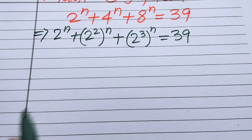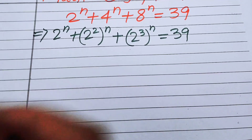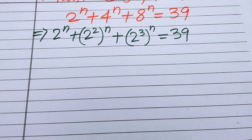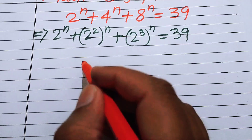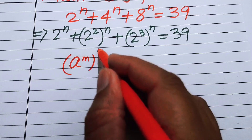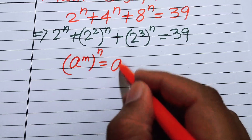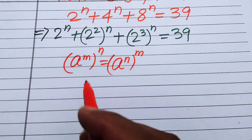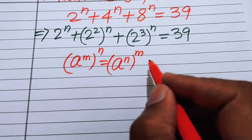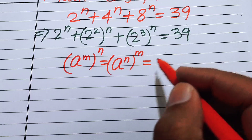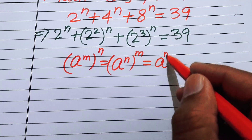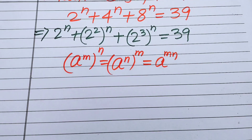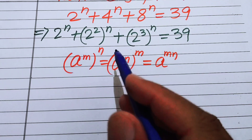In the next step we will use the exponential law: a to the power of m to the power of n equals a to the power of m times n. This means we can interchange the two exponents without affecting the final answer.